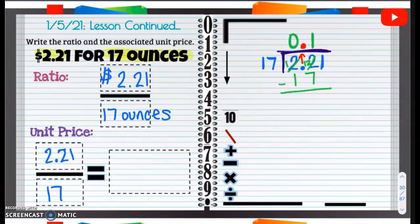So 12 minus 7 is going to be 5. I get 5. Now we can bring down that 1.